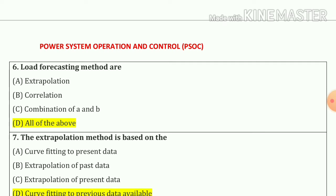Question number 6. Load forecasting methods are — our answer is all of the above, that means A, B and C.